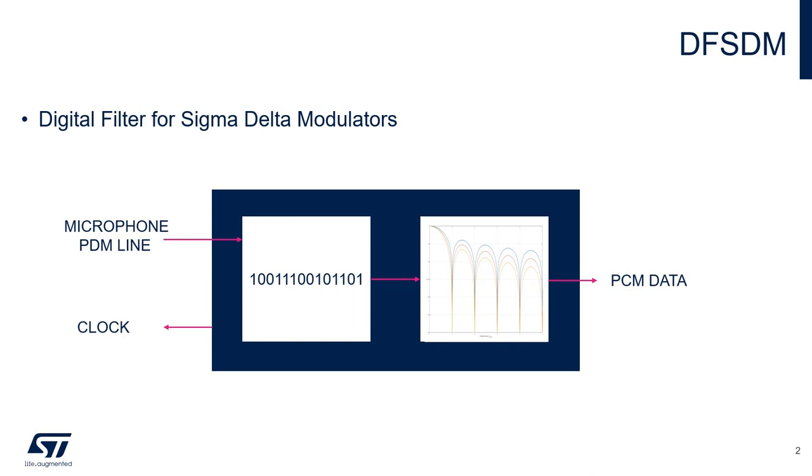This peripheral is able to both acquire and convert to PCM the bit stream coming from PDM digital microphones. It implements the kind of filtering and decimation required to convert PDM to a PCM signal. It offers the great advantage of offloading the core from the computation which usually is performed by means of the PDM to PCM library.